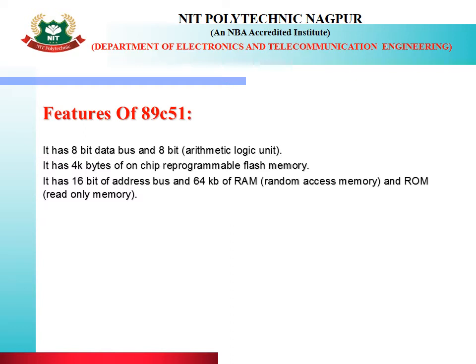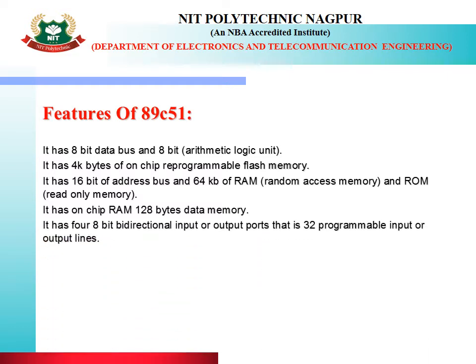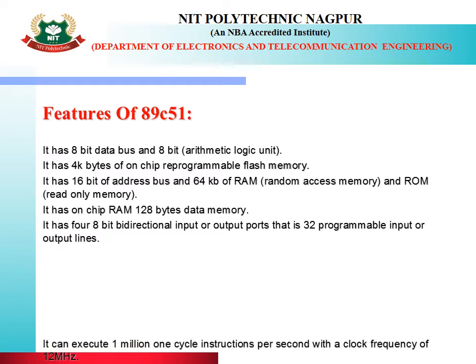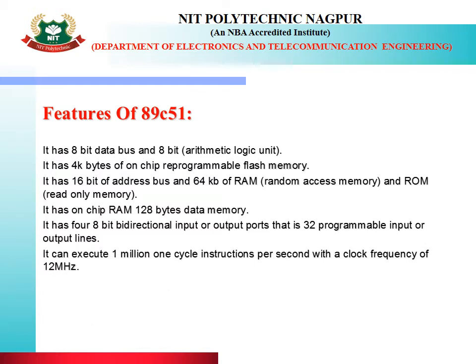It is having 64 KB of RAM and ROM, i.e., random access memory and read-only memory. It has on-chip RAM of 128 bytes data memory. It has a 4-bit bi-directional input and output port, i.e., 32 programmable input or output lines. It can execute 1 million one-cycle instructions per second with a clock frequency of 12 MHz, i.e., the crystal frequency. It has 1 UART programmable serial port, i.e., the universal asynchronous receiver transmitter.